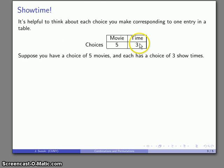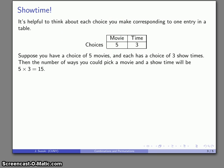So I have five choices of movies, three choices of times, and the fundamental counting principle says the number of ways I could pick a movie and a showtime is 5 times 3, which equals 15.